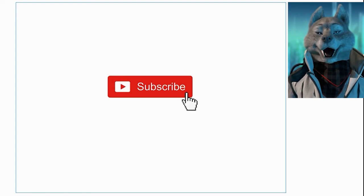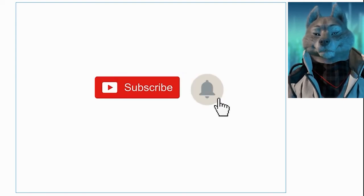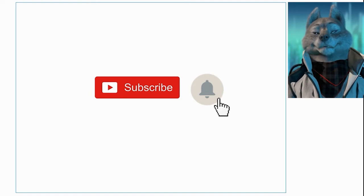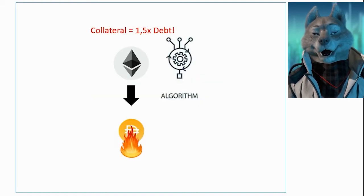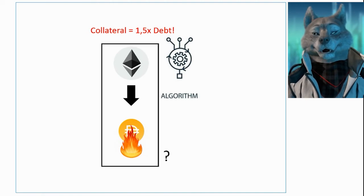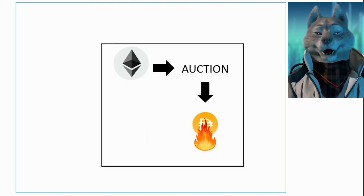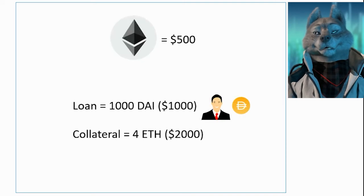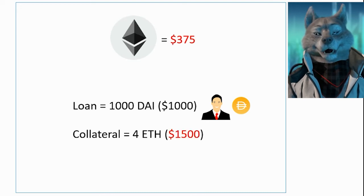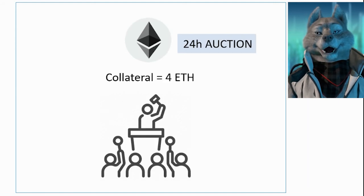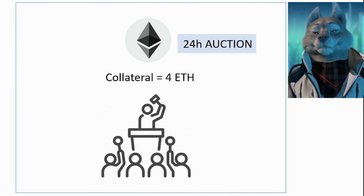We've seen the conditions for a liquidation to happen, but we haven't seen how it happens. In practice, an auction takes place for each liquidation, where interested users can offer amounts to buy the locked collateral. If Bob applied for a loan of 1,000 DAI offering 4 ETH as collateral and was liquidated when the price of ETH dropped to $375, an auction is started with a duration of 24 hours where different users can compete with each other for the highest bid to purchase these 4 ETH. The bids are made in DAI tokens.